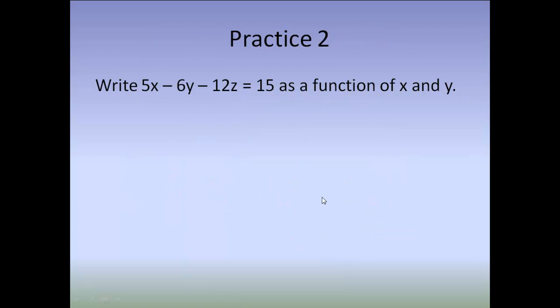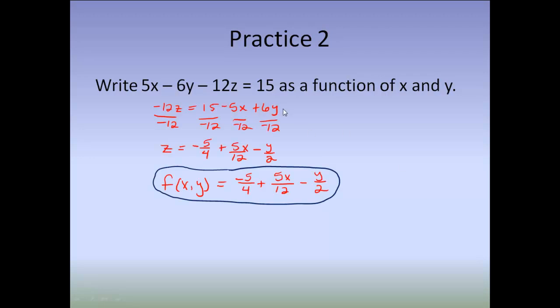Okay, so here's your last practice one. Go ahead and pause the video and write this as a function of X and Y. Okay, the first thing I did was I subtracted the 5X over and I added the 6Y over to the other side. Then, I divided every single thing by negative 12. I reduced so the 15 over negative 12 turns out to be negative 5 fourths. The negative 5X over negative 12 is positive 5 over 12. And then, the 6 over the negative 12 reduces down to a negative 1 half with the Y. The last step you need to do is you need to replace that Z with your function notation to get your final answer.